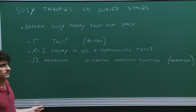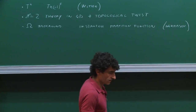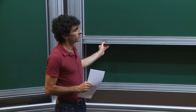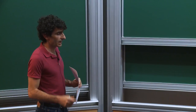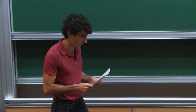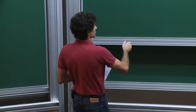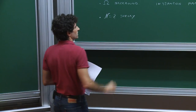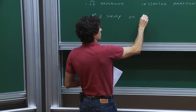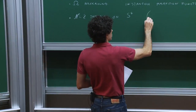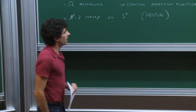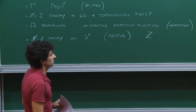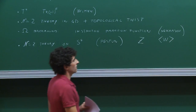Another interesting deformation in the context of N=2 theories is the so-called omega background, which was very successfully used by Nekrasov to compute instanton partition functions. More recently, there has been a lot of interesting developments using localization techniques. A famous example is taking an N=2 theory and placing it on the four-sphere, which was done by Pestun. This allows localization techniques to compute the partition function or even the expectation value of certain supersymmetric Wilson loops along the equator of the sphere.